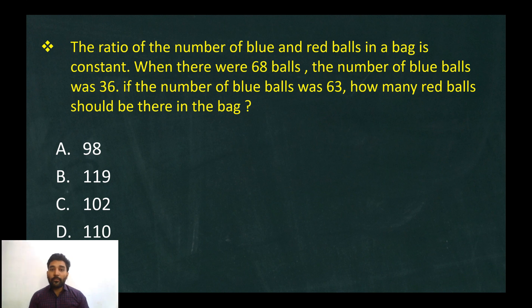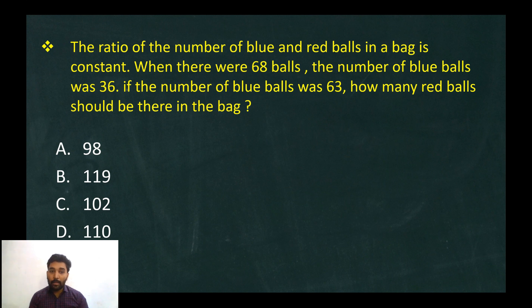The ratio of the number of blue and red balls in a bag is constant. When there were 68 balls, the number of blue balls was 36. If the number of blue balls is 63, how many red balls should be there in the bag?